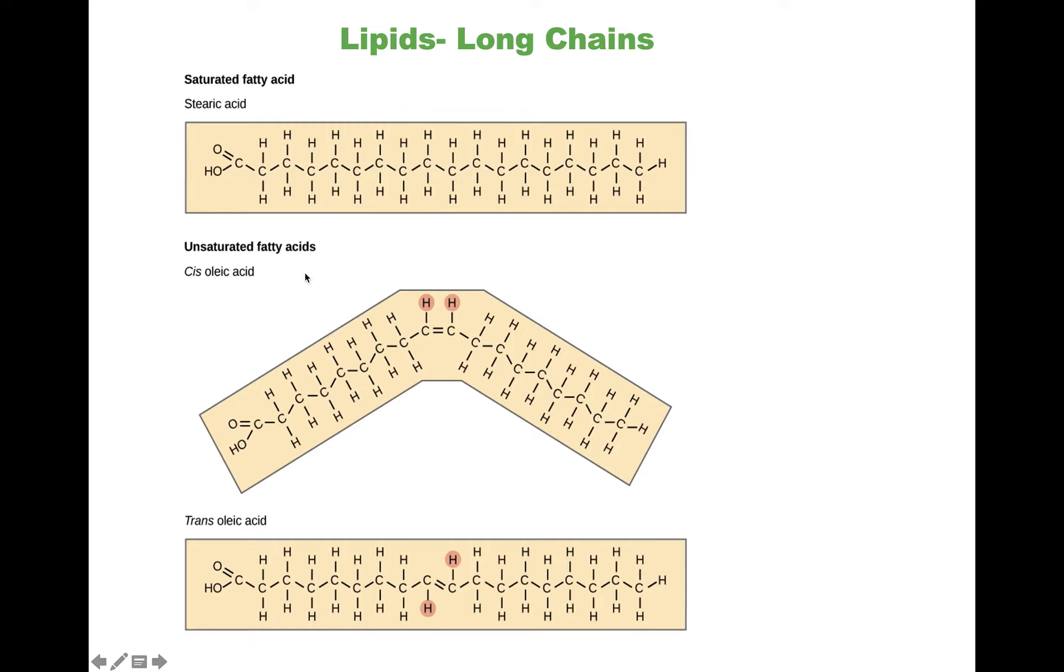In an unsaturated fatty acid, carbon is not making bonds with four separate entities. So in here, this carbon is making one bond with this hydrogen, one bond with this carbon, but a double bond with a carbon next to it. So therefore, it is not saturated. And the way you would make an unsaturated fatty acid saturated is by adding hydrogen in here and turning this bond into something like this.